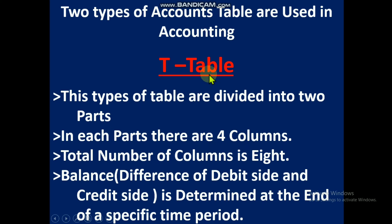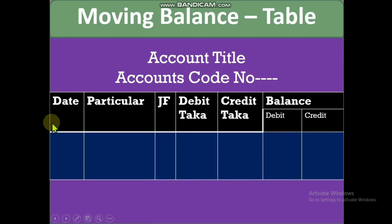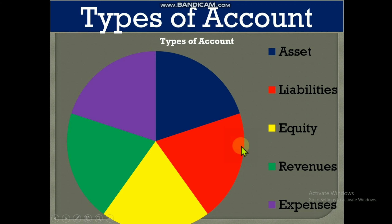In moving balance format, debit and credit amount columns are situated side by side — there are no two separate sides. The format includes: account title, account code, then date, particular, JF as three common columns, then debit Taka, credit Taka, debit balance, and credit balance — total seven columns.